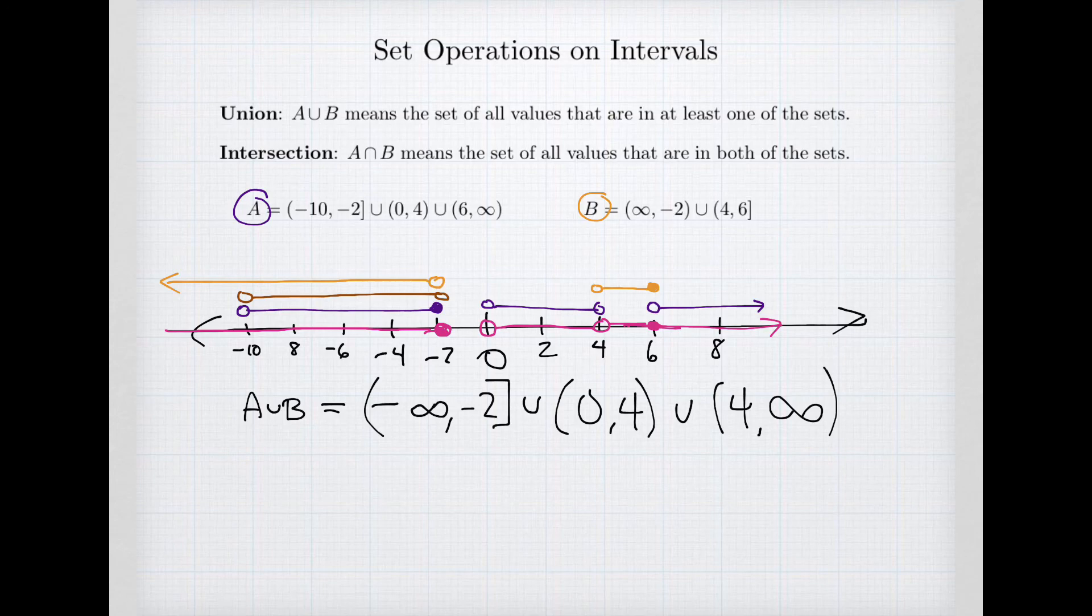All right, next we only have A, so nothing's going to be in the intersection. Now we have only B, and at the edge neither one is included. At 6, neither one's included, or one's included but not both. And finally we have just A. So my intersection for this particular problem is just one interval. A intersect B is a single interval starting at negative 10 and going to negative 2.